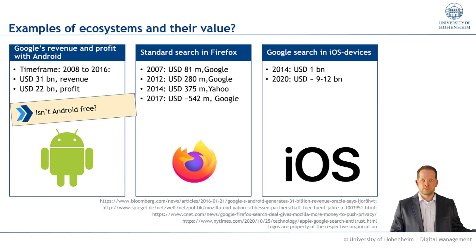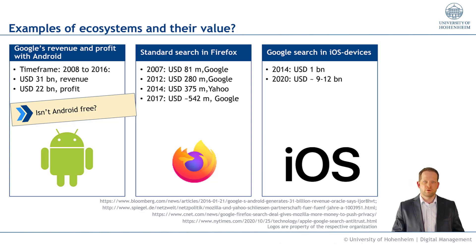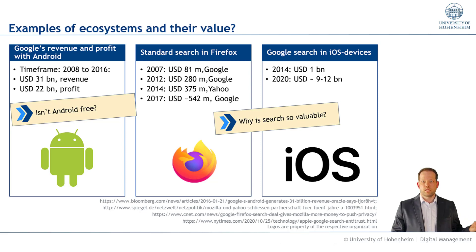If you look at Apple's iOS, it's basically the same. In 2014, Google paid about 1 billion US dollars for being the standard search on iOS devices. In 2020, they paid another 9 to 12 billion — the exact figure is not public — for being that default search engine. Why is search so valuable? This is food for thought for you to discuss. Let's look at what ecosystems are.